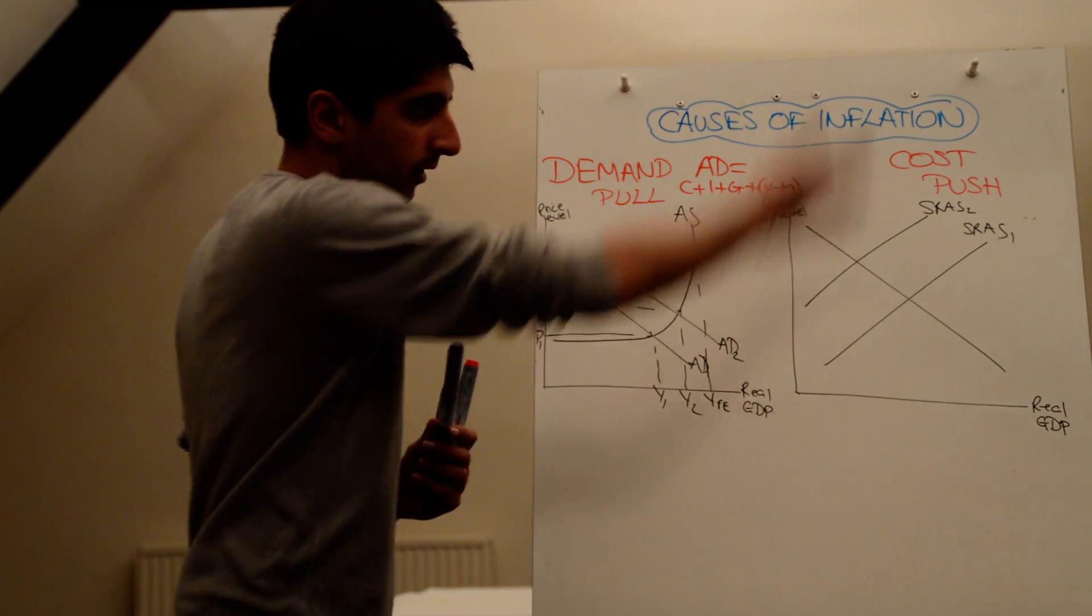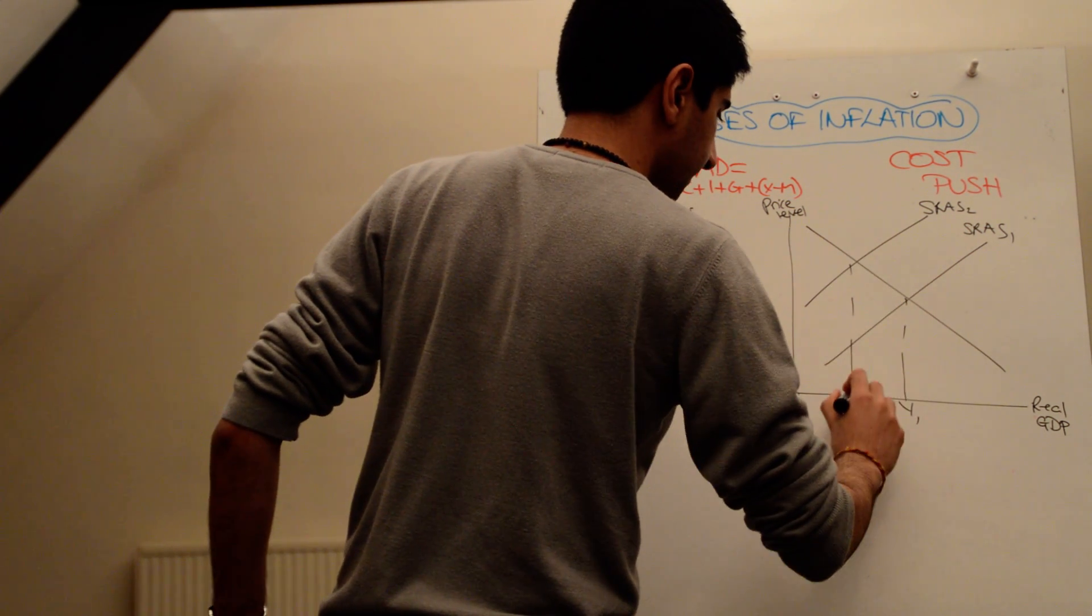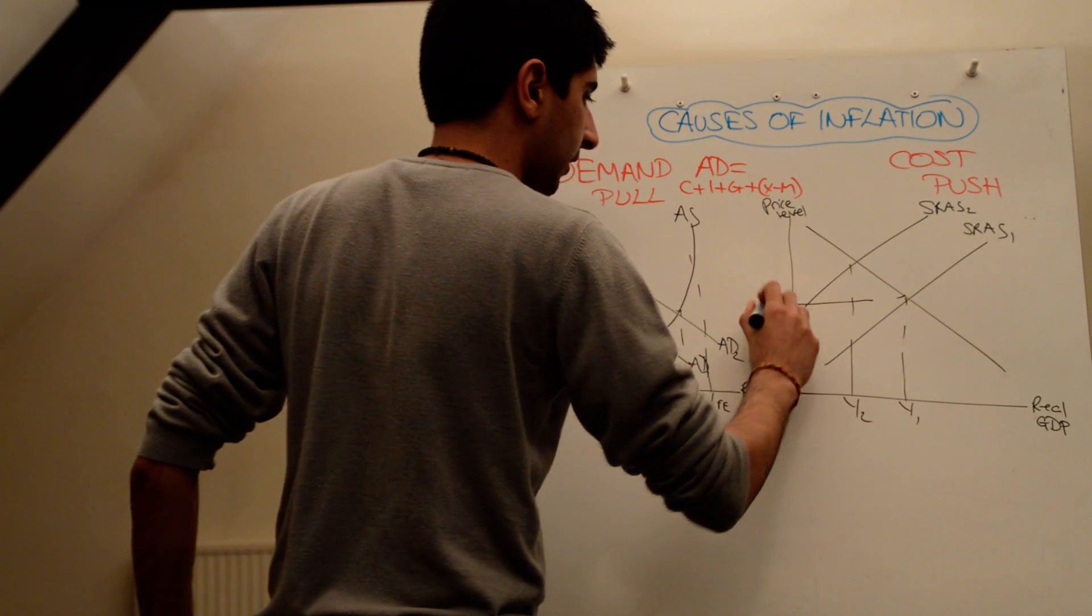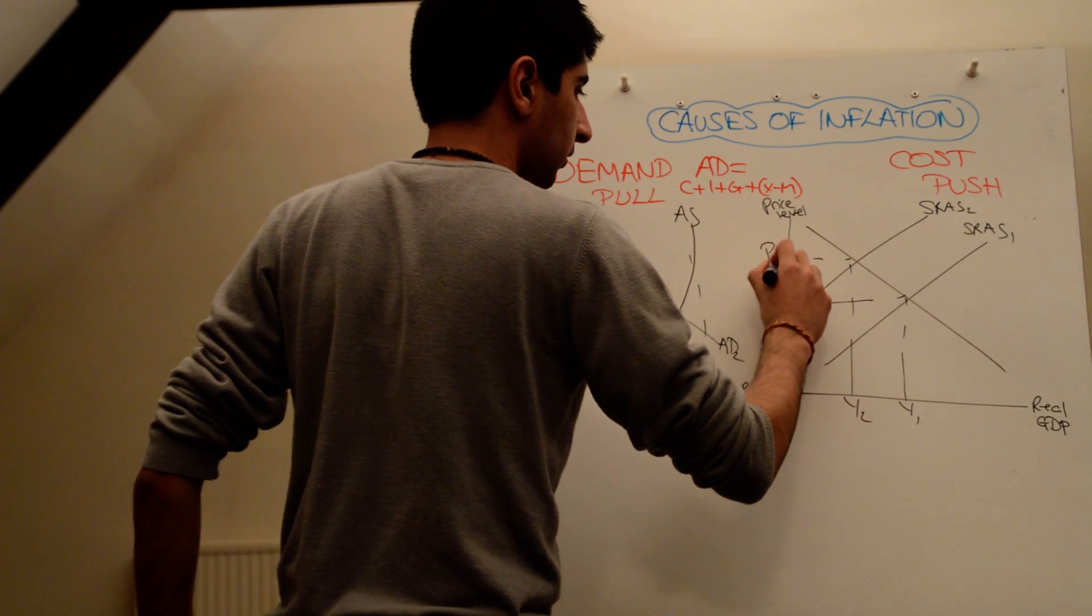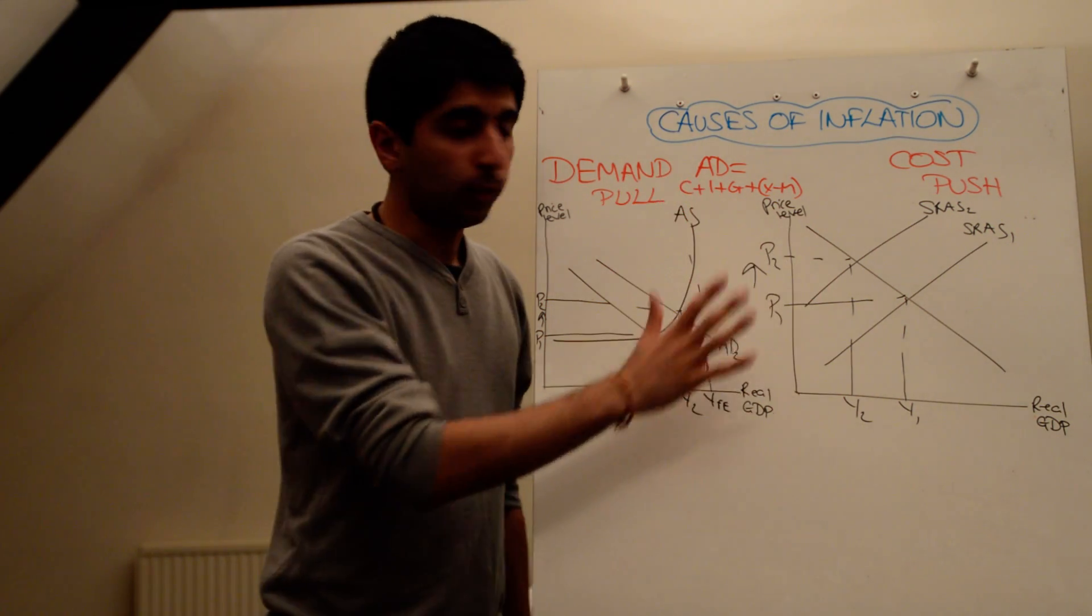Short run aggregate supply looks like that. It's just an upward sloping curve. And you can see here the increase in prices from P1 to P2. So what's going on here? What might cause that?